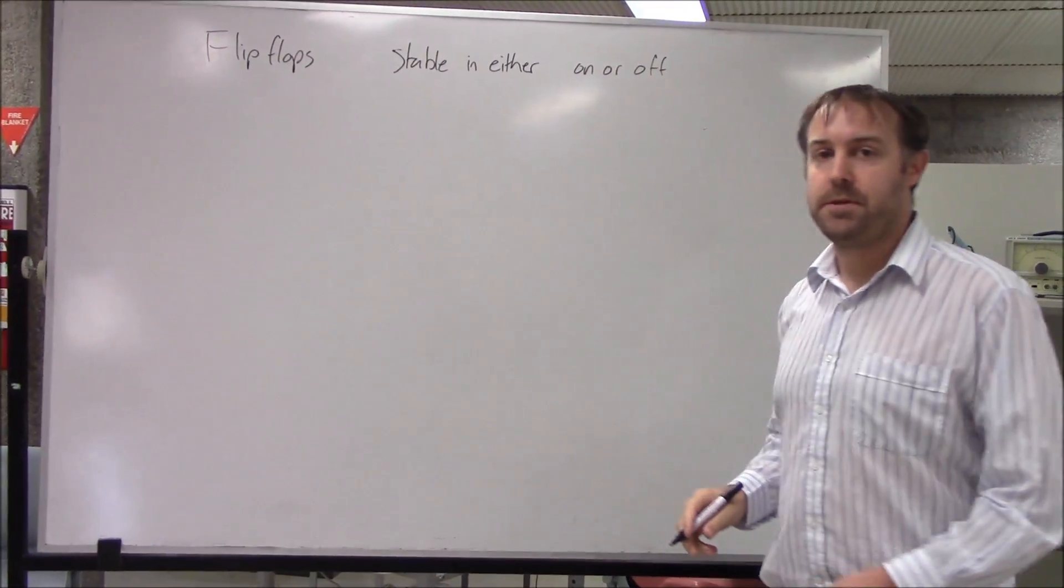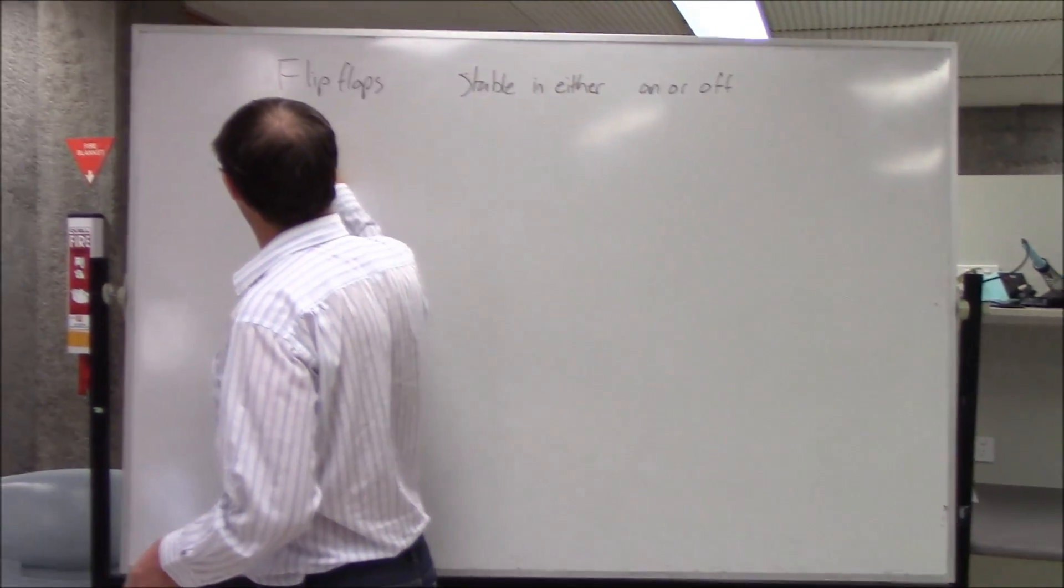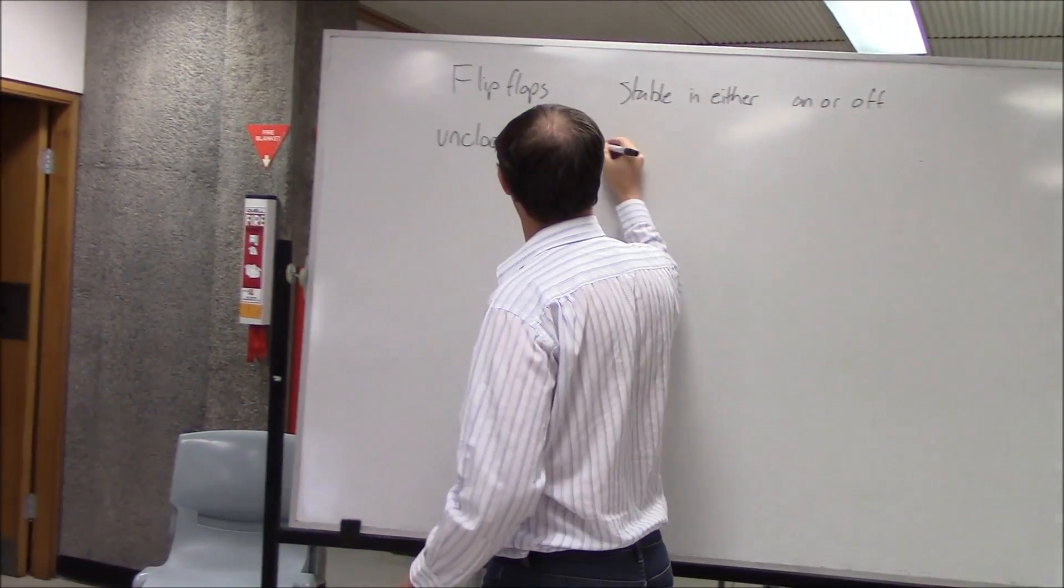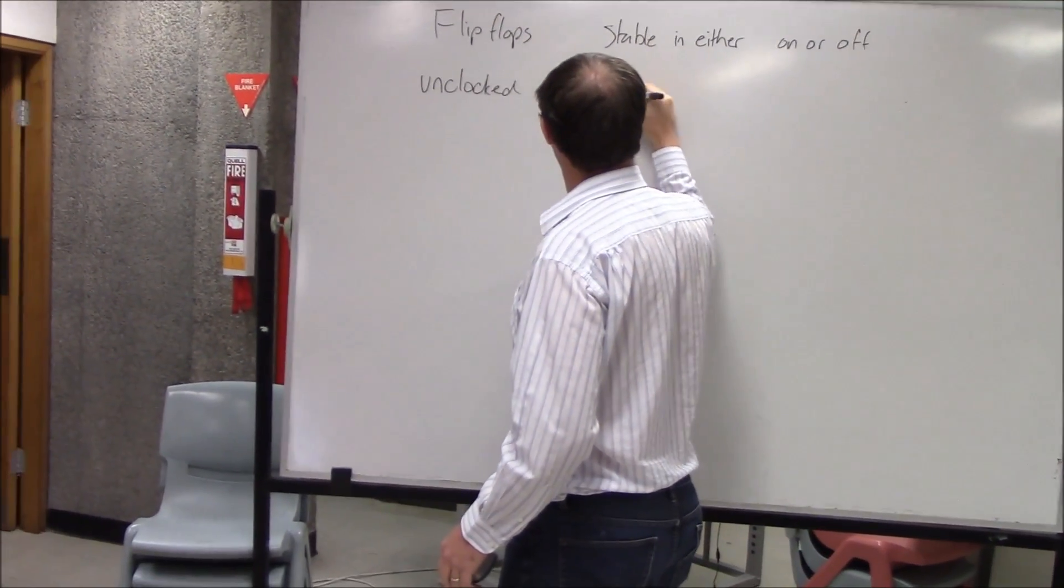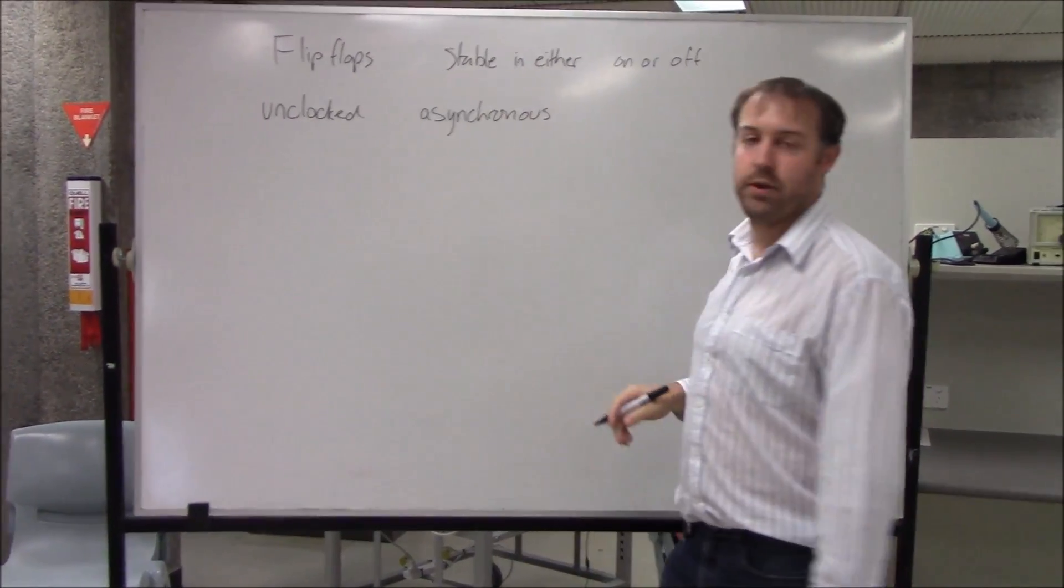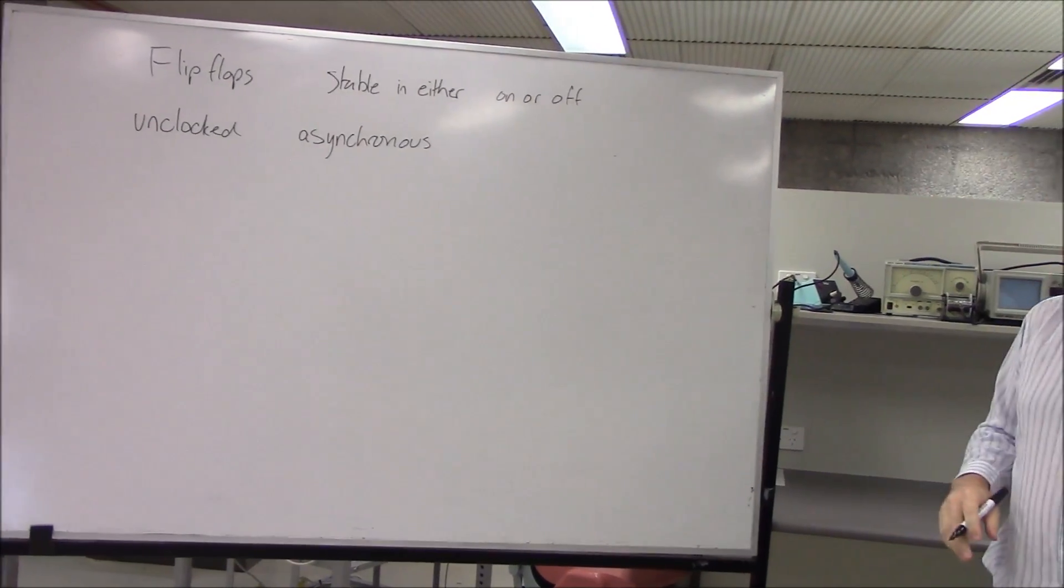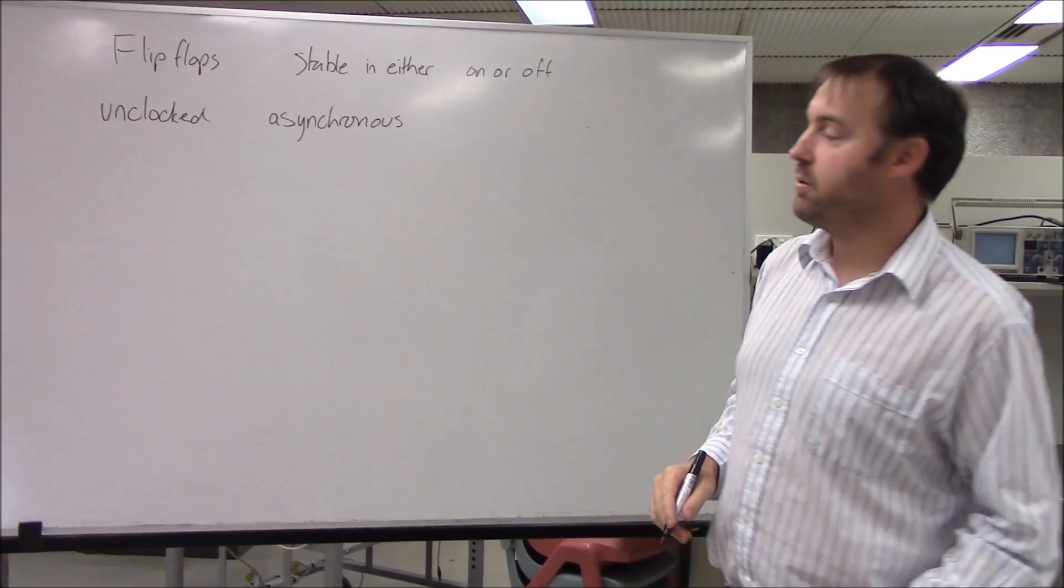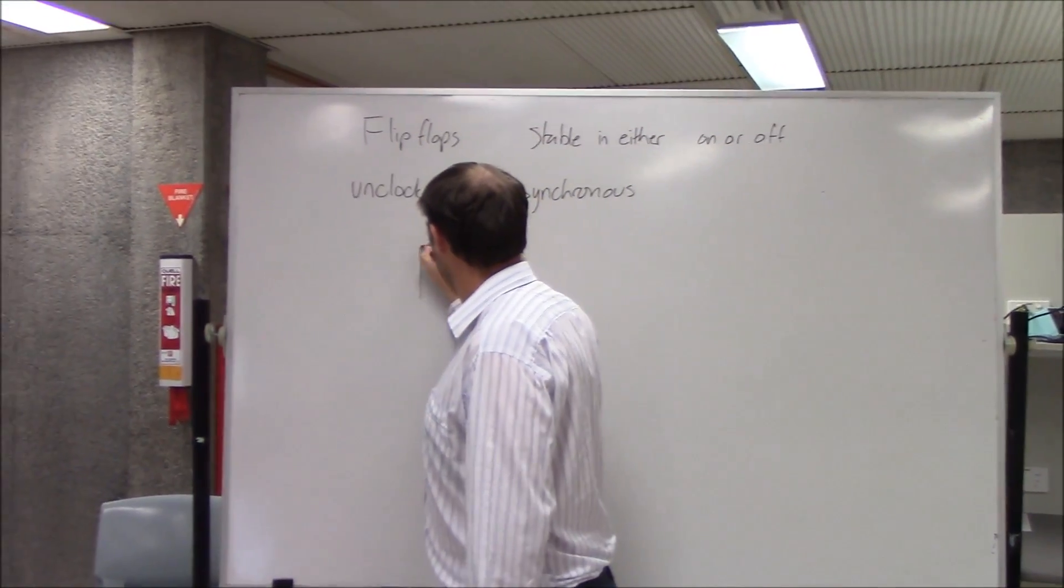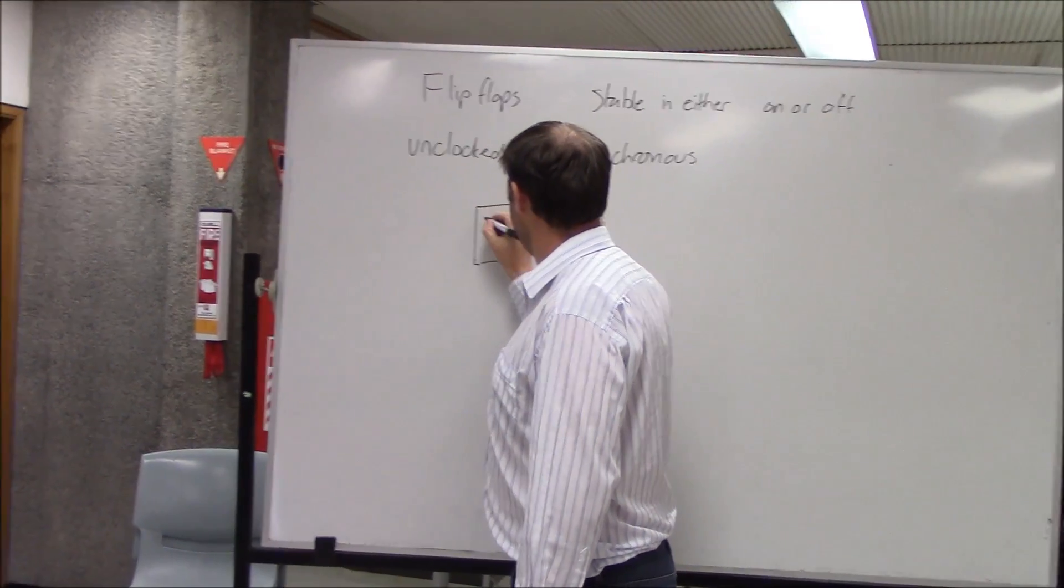So there are several types. We'll look at the unclocked, which is the asynchronous type first, and we'll then discuss what it means after we get to the synchronous, what the difference between asynchronous and synchronous is. An unclocked flip-flop example is an SR.